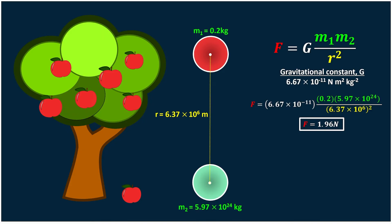Once you press everything into your calculator, you should get a force of 1.96 Newtons. This means the apple experiences a gravitational force of 1.96 Newtons, and the Earth also experiences the same amount of force due to the existence of the apple.